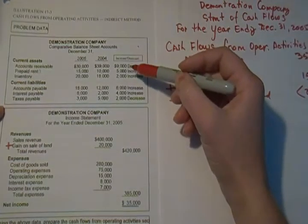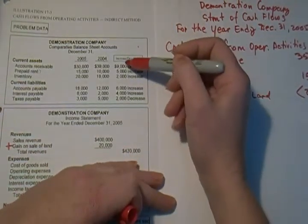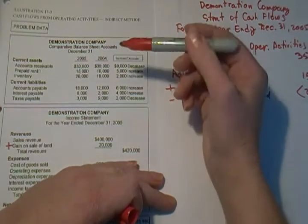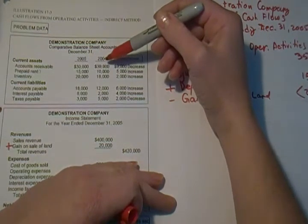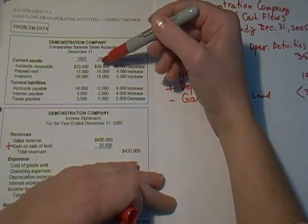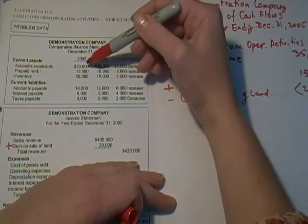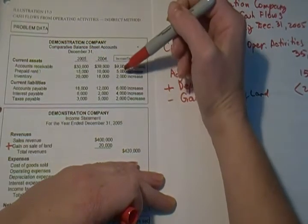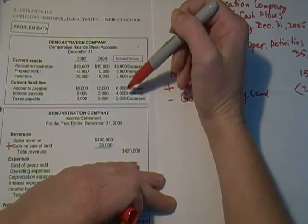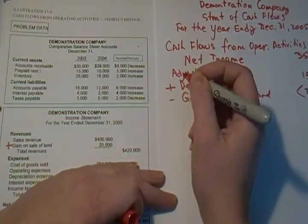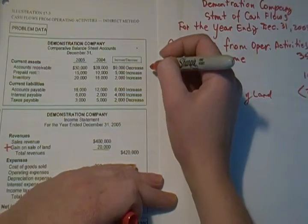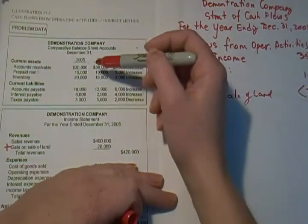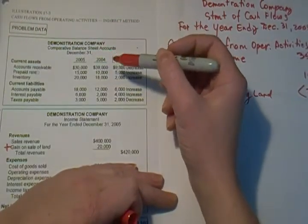Now we are ready to go through your non-cash current assets and liabilities. I already went ahead and coded the decreases or increases from the beginning of the year to the end. To do that, just look at accounts receivable: you started the year with thirty-nine thousand dollars, dropping down to thirty. Prepaid rent started at ten, up to fifteen — so it's a five thousand dollar increase — and so forth.